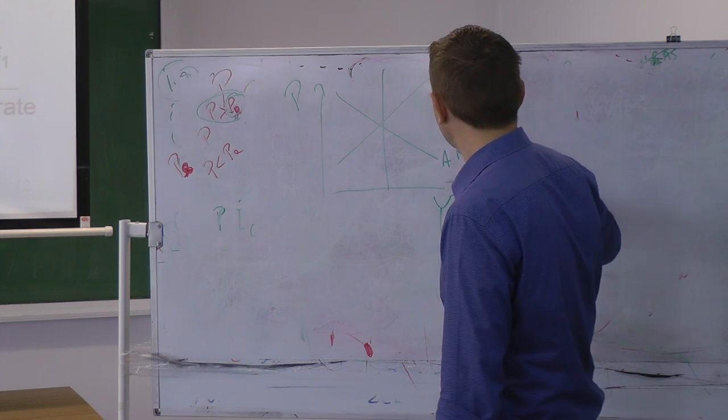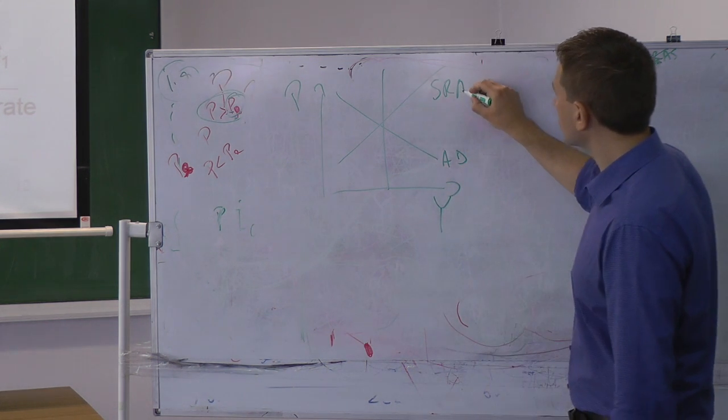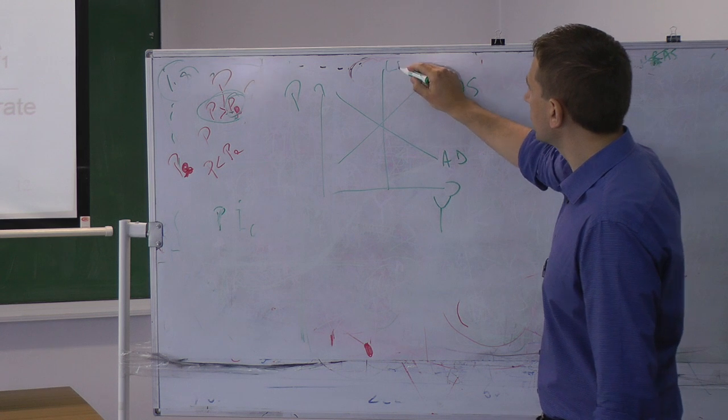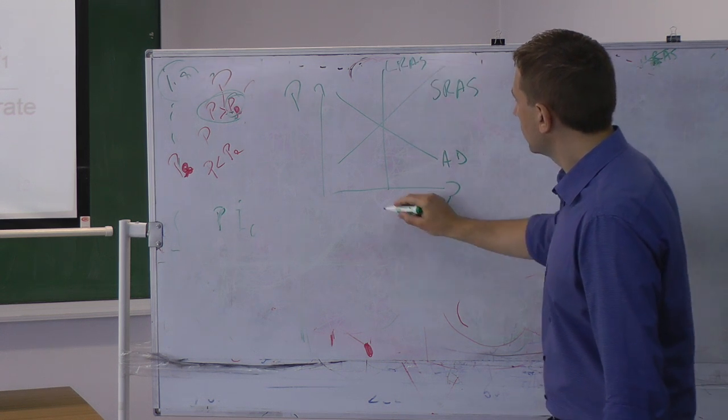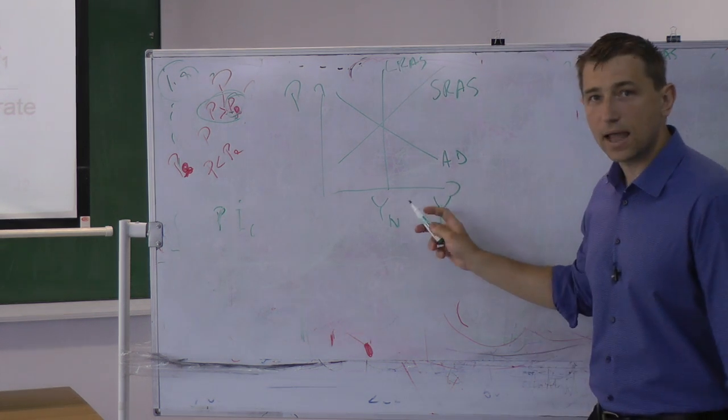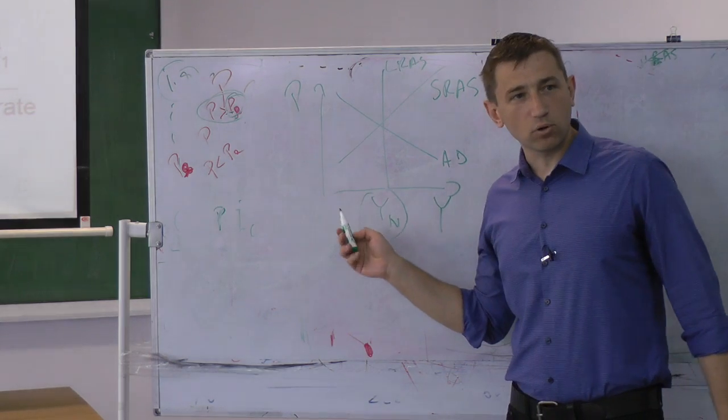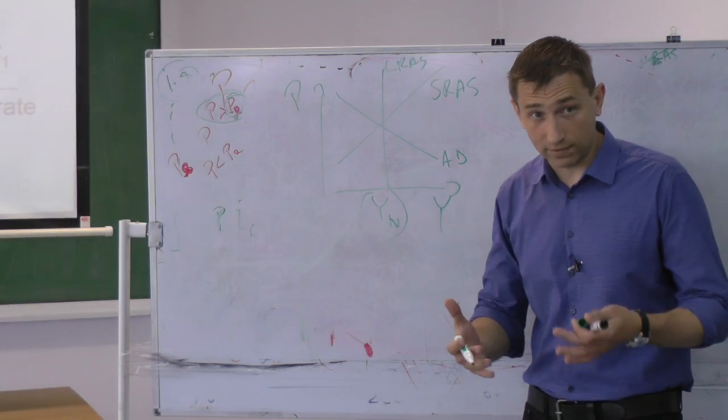Aggregate demand, short run aggregate supply, long run aggregate supply. And the economy is here at the natural level, which means unemployment is also at the natural level.